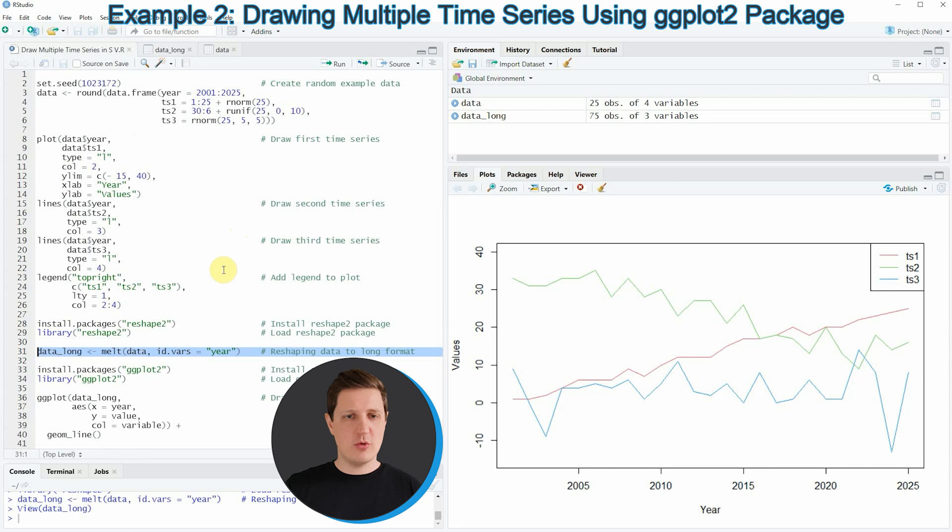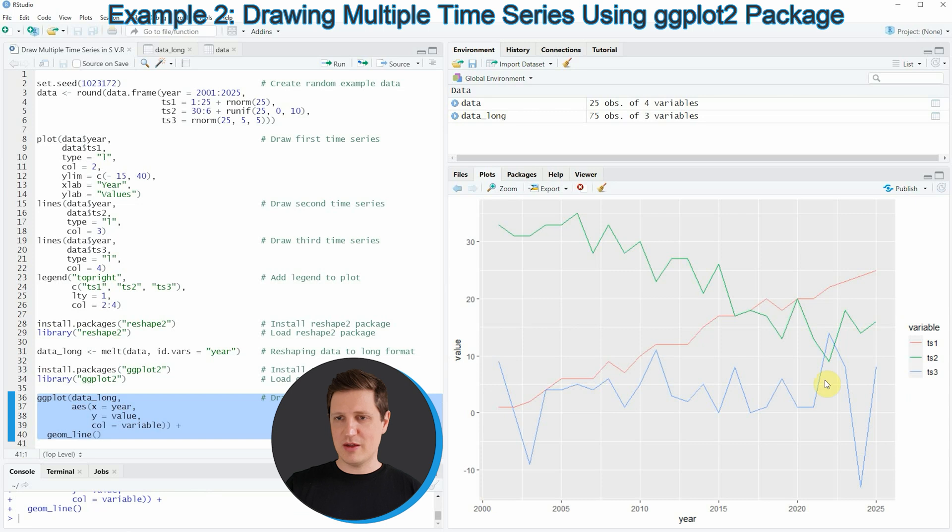In the next step we have to install and load the ggplot2 package as you can see in lines 33 and 34 of the code. I have installed this package as well so I'm just going to load it with line 34, and after running this line of code we can use the ggplot and the geom_line functions to draw our data in long format in a plot showing different time series data. If you run lines 36 to 40 of the code you will see that another plot is created and this plot is showing our three time series and a legend on the right side of the plot.